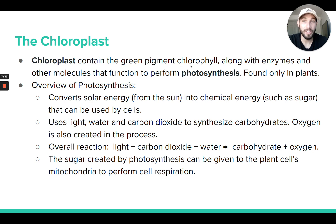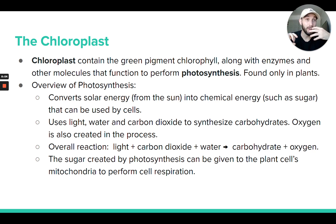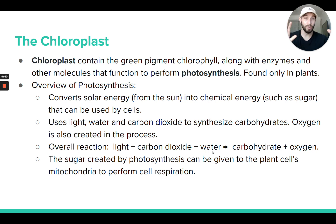The main function of the chloroplast is to do photosynthesis. Chloroplasts contain a green pigment called chlorophyll, along with enzymes that allow photosynthesis to occur. Energy from light is absorbed via chlorophyll, and the chloroplast uses that energy to start building organic molecules — simple carbohydrates like glucose. The overall reaction: light energy plus CO2 and water are the reactants.